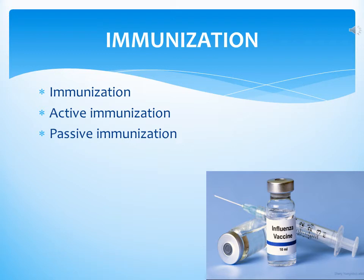Passive immunization can also be achieved by injecting a recipient with preformed antibodies, called antiserum, from immune individuals. Active immunization can be achieved by natural infection with microorganisms or causative agents, or acquired artificially through administration of a vaccine. In active immunization, the immune system plays an active role through proliferation of antigen-reactive T-lymphocytes and B-lymphocytes, ultimately inducing the formation of protective memory cells.